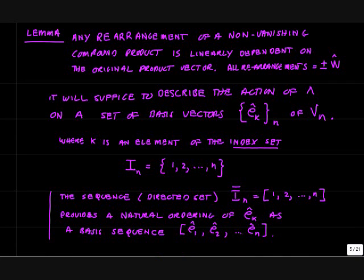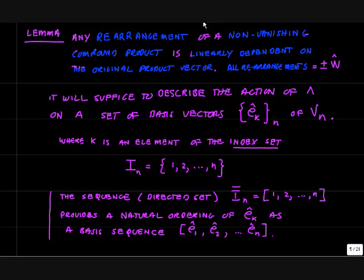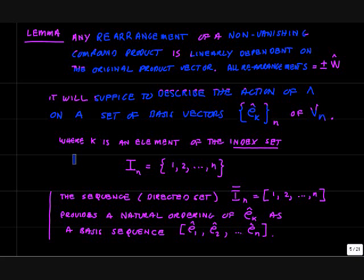Here is a lemma we can get from the rules of the wedge product: any rearrangement of a non-vanishing compound product is linearly dependent on the original product vector. In other words, if you have a compound product giving you vector W and you rearrange the factors, the only thing that happens is the sign changes — you get W, but just with a plus or minus sign. This means it suffices to describe the action of the wedge on a set of basis vectors of Vn.